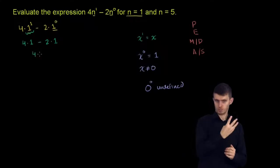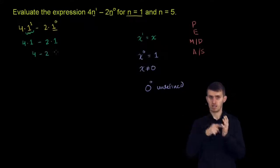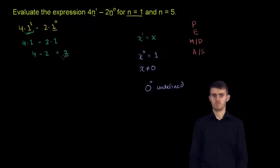Anything other than 0 to the 0th power is 1. So we have 4 times 1, which is 4, minus 2 times 1, which is 2. So 4 minus 2 is just equal to 2.